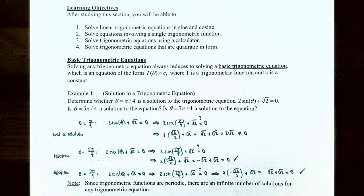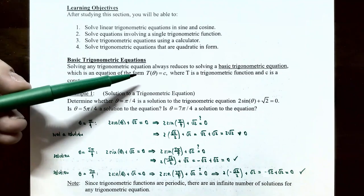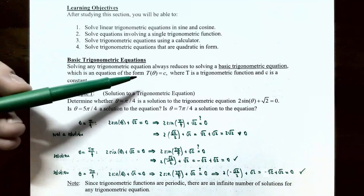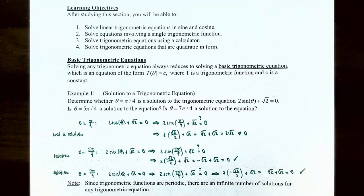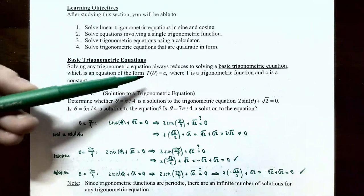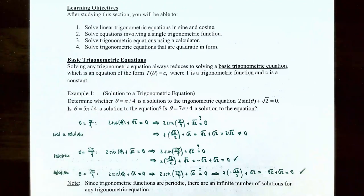To solve a trigonometric equation, you always need to reduce it to a basic trigonometric equation — an equation of the form t(θ) = c, where t is the trigonometric function and c is a constant. You have one trigonometric function on one side and a constant on the other.